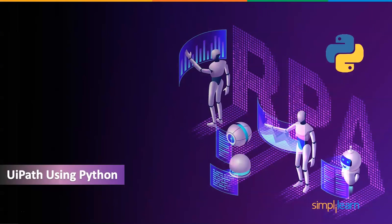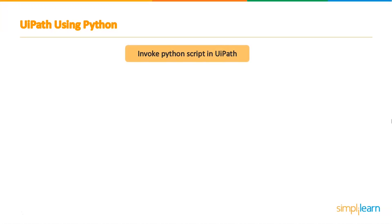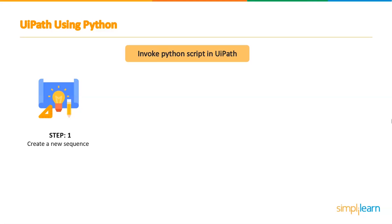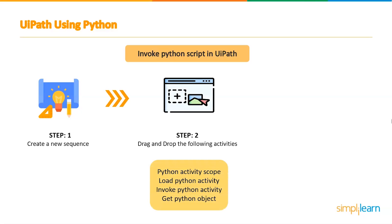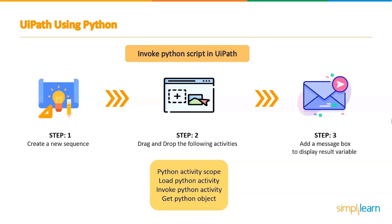UiPath using Python. To invoke a Python script in UiPath, we must first create a new sequence. Then we should drag and drop the following activities from the Python activities pack: Python activity scope, load Python activity, invoke Python activity, and get Python object. Then we will use a message box to display the result variable.